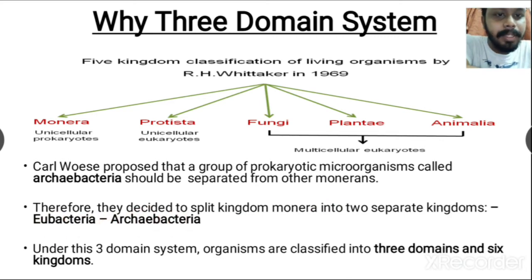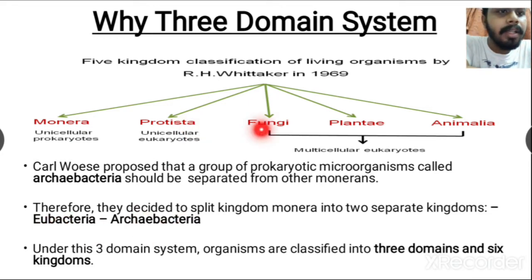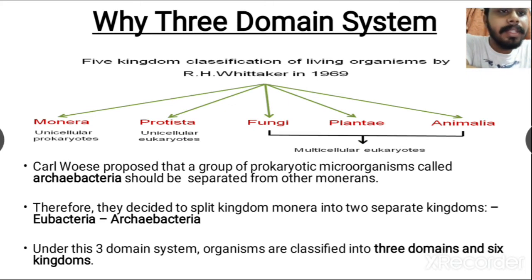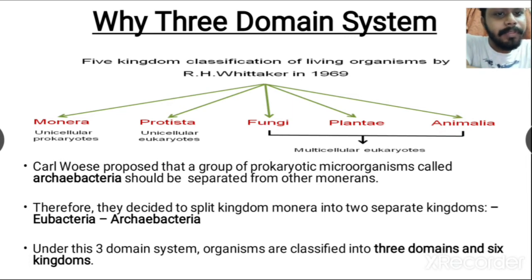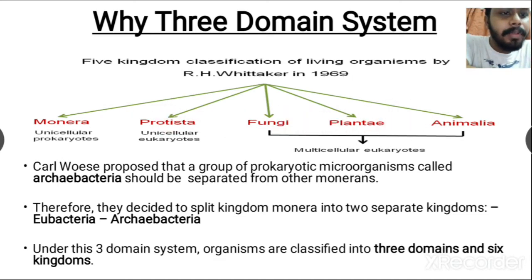Therefore, Woese decided to split kingdom Monera into two separate kingdoms: Eubacteria and Archaebacteria. The other kingdoms — Protista, Fungi, Plantae, and Animalia — remained the same, giving a total of six kingdoms. He then proposed three domains under which these six kingdoms are organized.